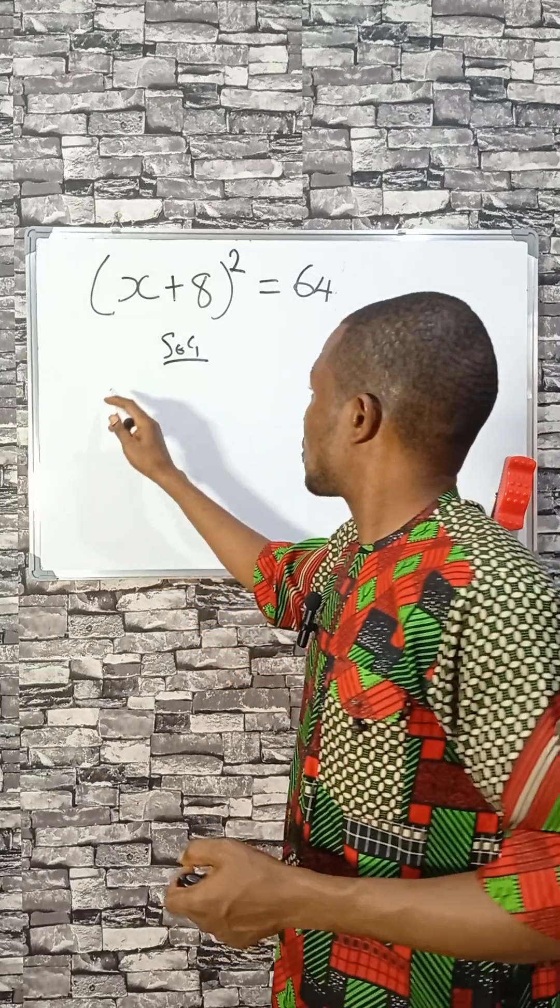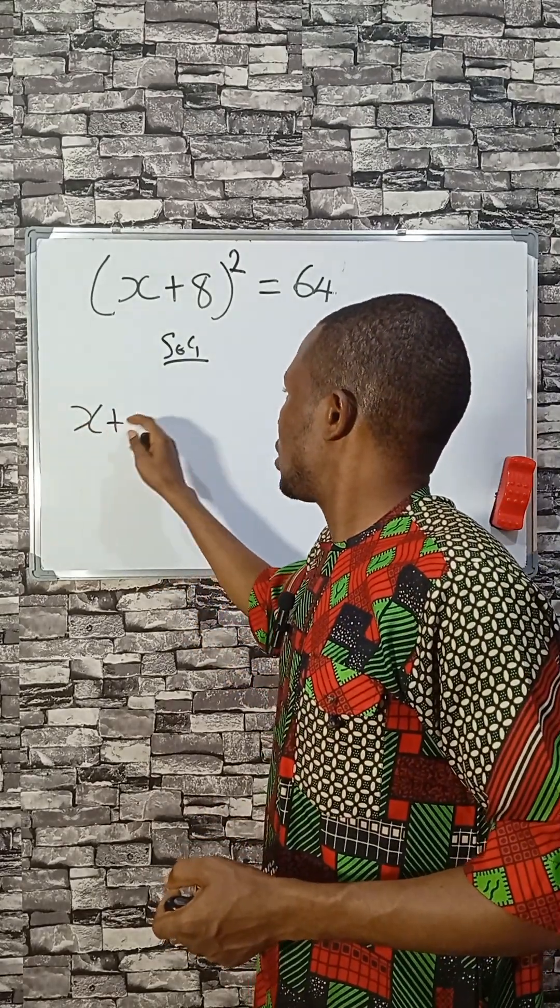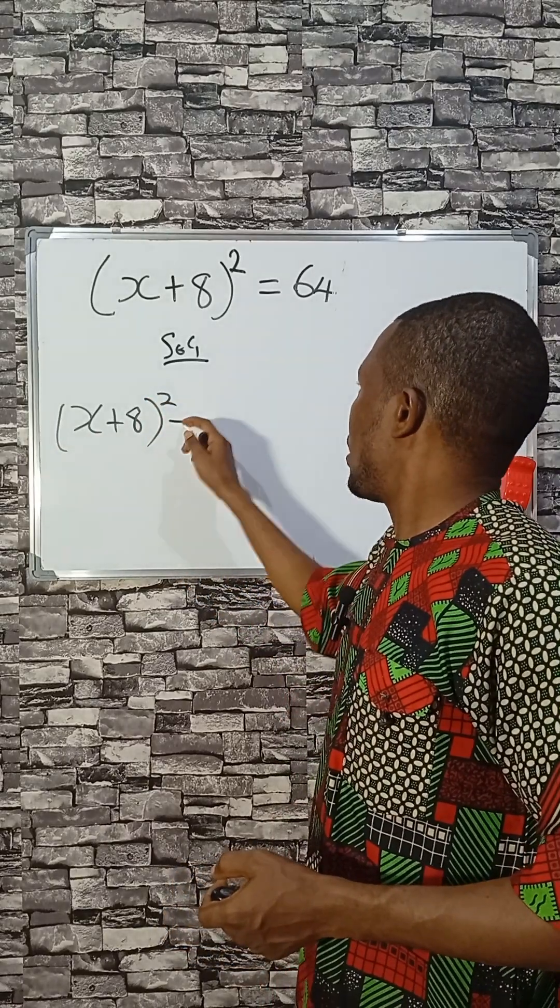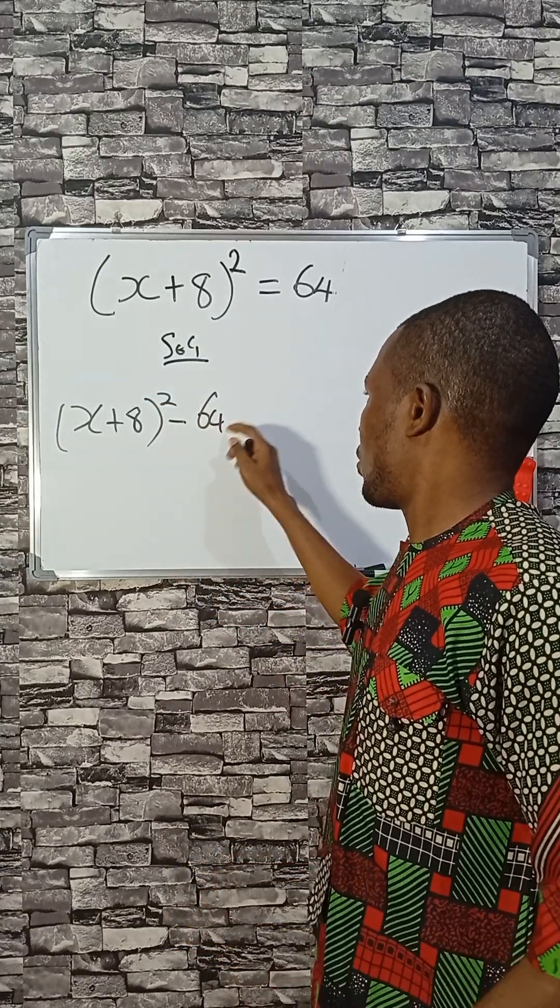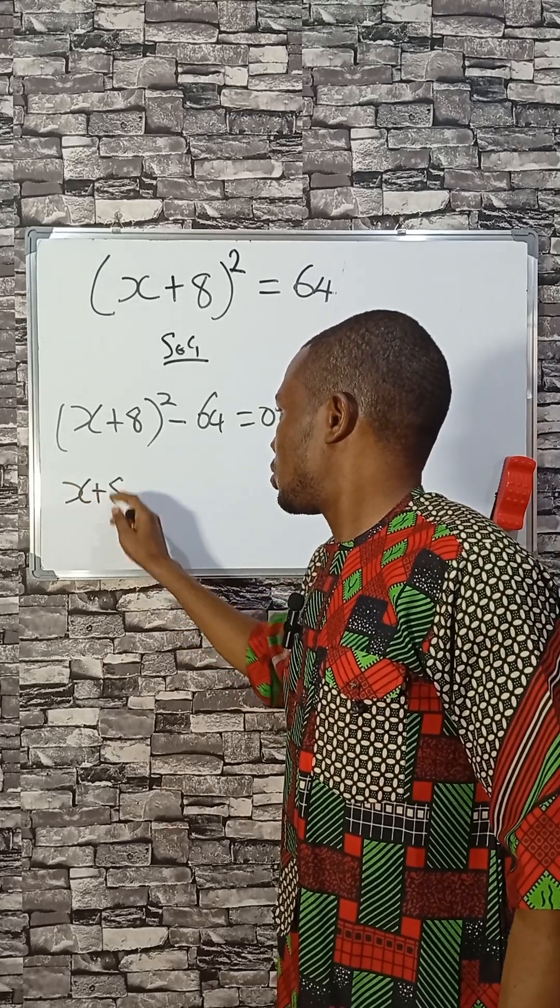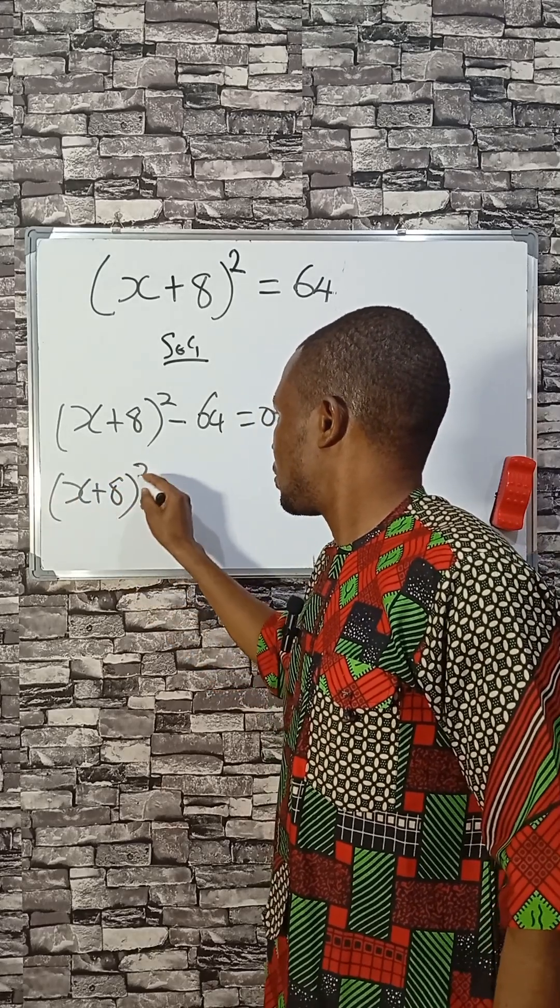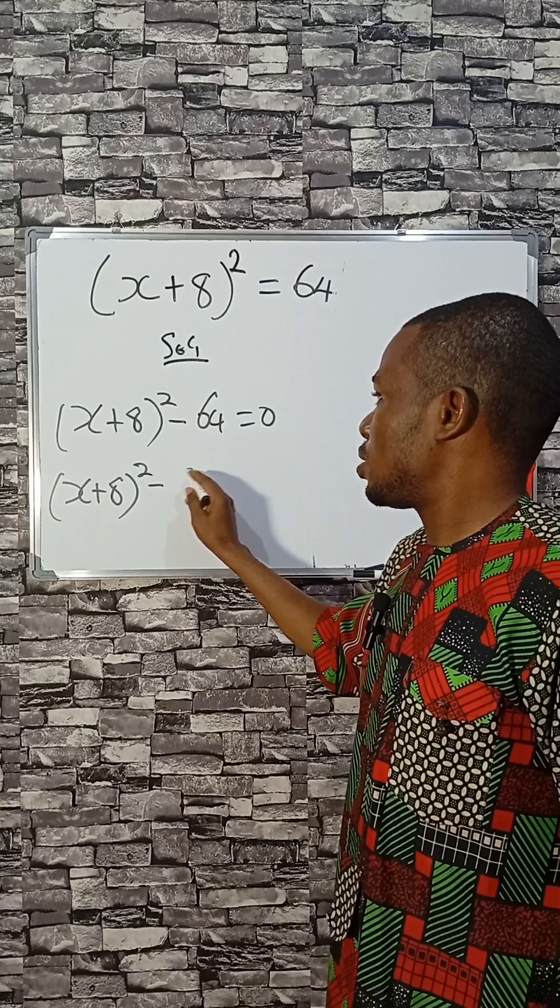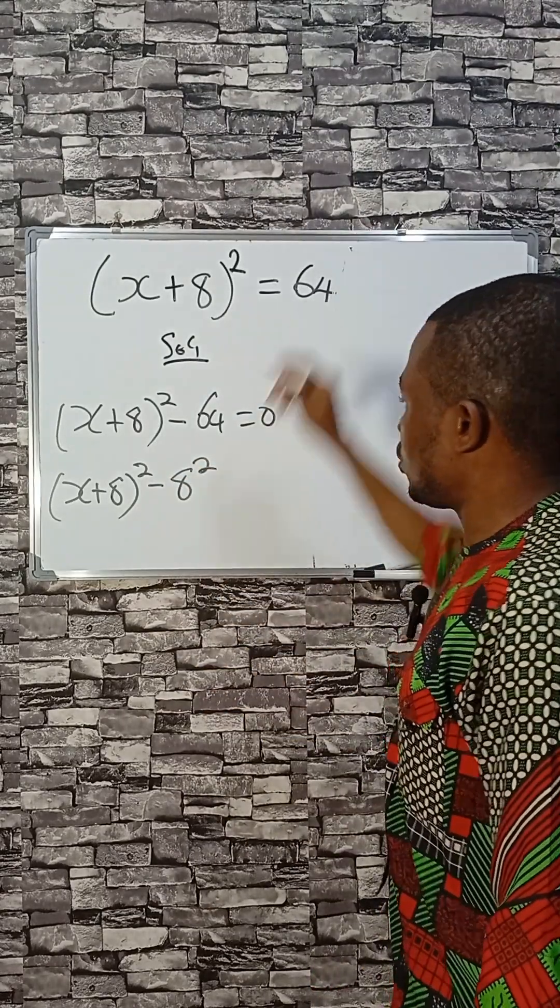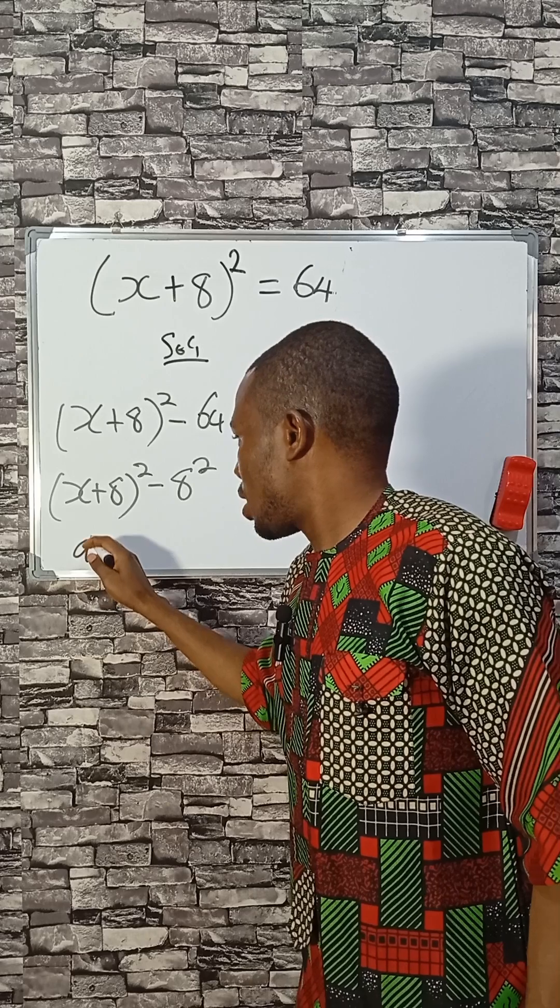Depending on the method you're going to use, (X+8)² - 64 = 0. Now, this 64 is 8 squared, so I'm going to apply difference of two squares.